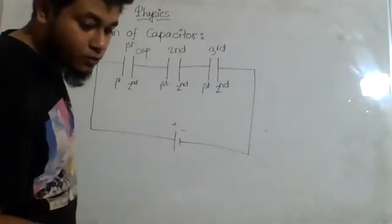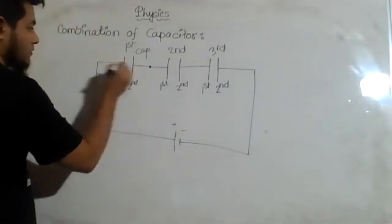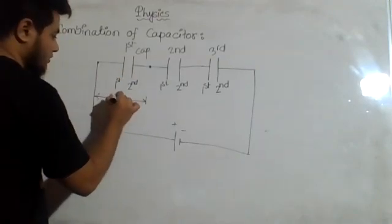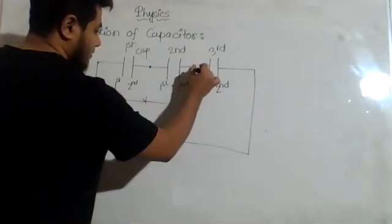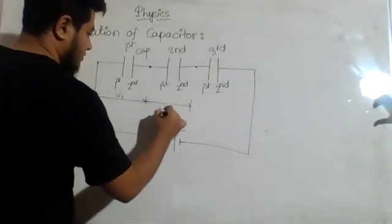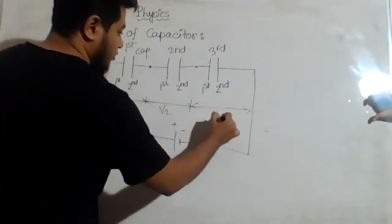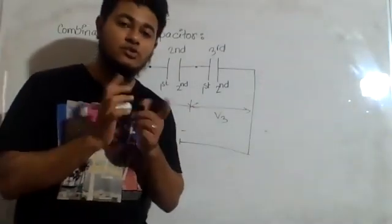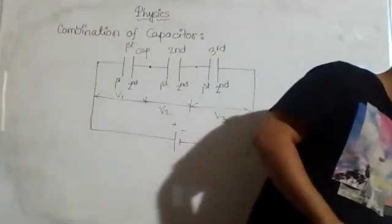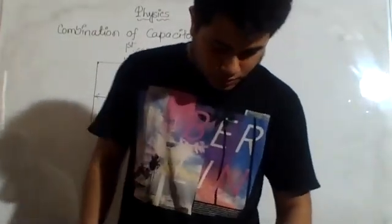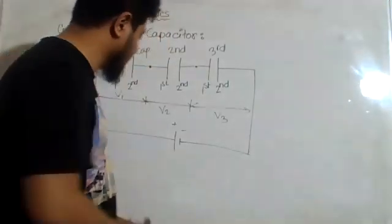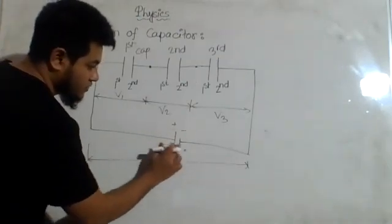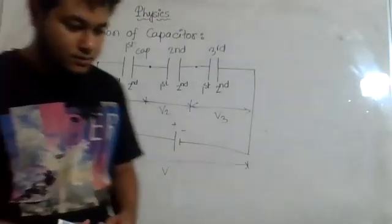Now, as they have shown, the potential difference between one terminal and another terminal — the potential difference between these two points is V1, again between these two points it is V2, and between these two points it is V3. It is not the distance, it is the potential difference between two points. And the total potential difference, as they have shown, will be V.